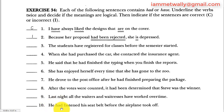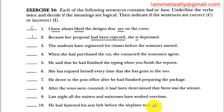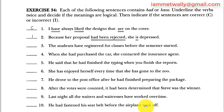Sentence ten: 'He had fastened his seat belt before the airplane took off.' 'Had fastened' is past perfect and 'took off' is past simple. Fastening the seat belt always comes before takeoff, so it is natural for the past perfect to happen before the past simple. Sentence ten is correct.